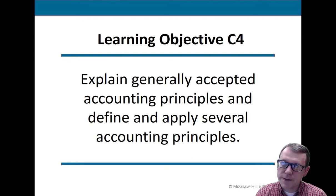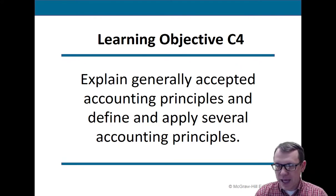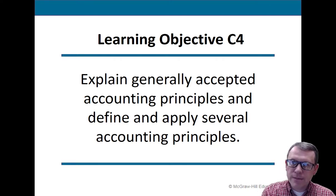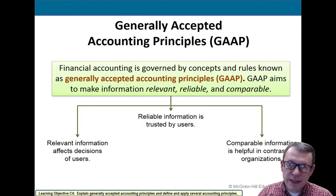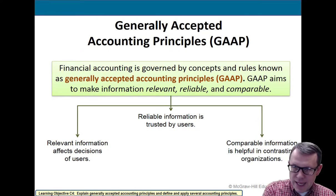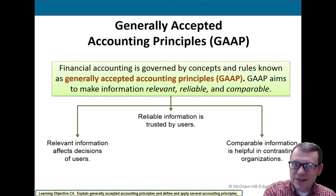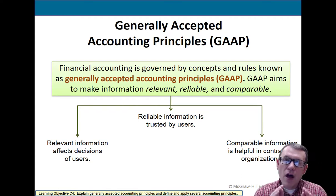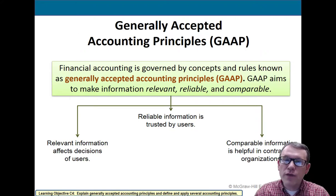Learning objective number four: explain generally accepted accounting principles and define and apply several accounting principles. Generally accepted accounting principles are also known as GAAP — these are the bedrock or foundation of professional accounting in the U.S. GAAP makes sure that information is relevant and timely, that it's reliable, and also comparable — meaning all companies use the same principles to prepare their financial statements so you can compare company A to company B.